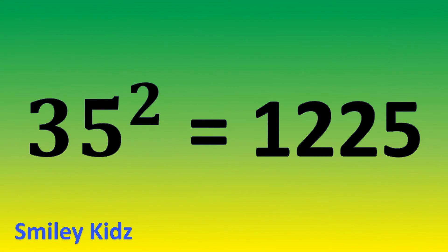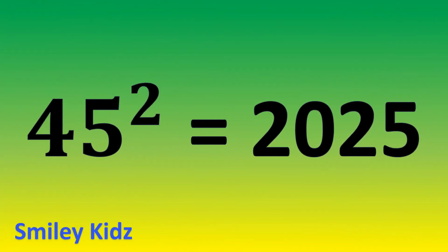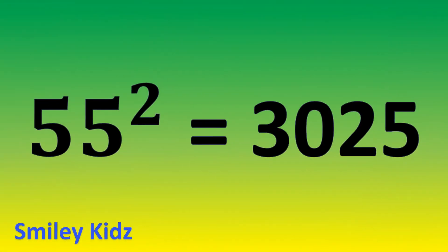35 square is 1225. 45 square is 2025. 55 square is 3025.